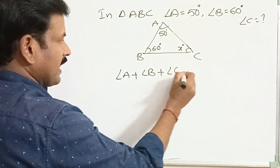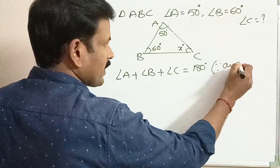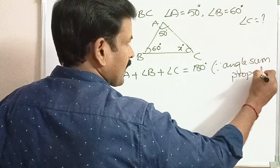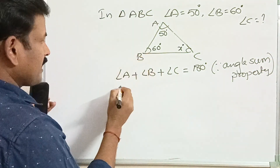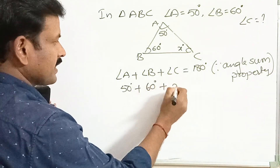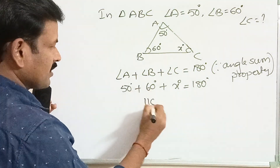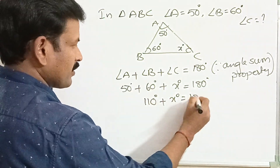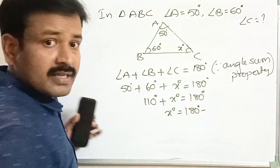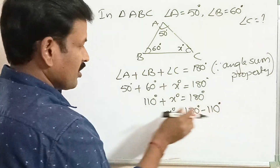We have angle A plus angle B plus angle C is equal to 180 degrees, since the angle sum property of a triangle. Substituting: 50 degrees plus 60 degrees plus x degrees equals 180 degrees. Now, 50 plus 60 is 110 degrees, so 110 plus x equals 180. Therefore, x equals 180 minus 110.